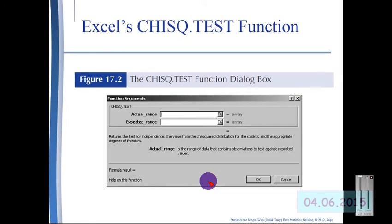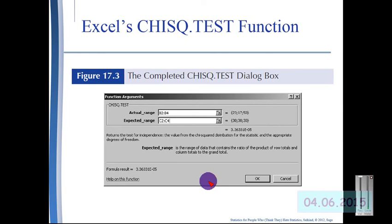Then we open up our chi-square test function dialog box, enter the range of our observed data, which is called the actual range, and then our expected frequencies in the expected range array box, such as what we see here in slide 16.